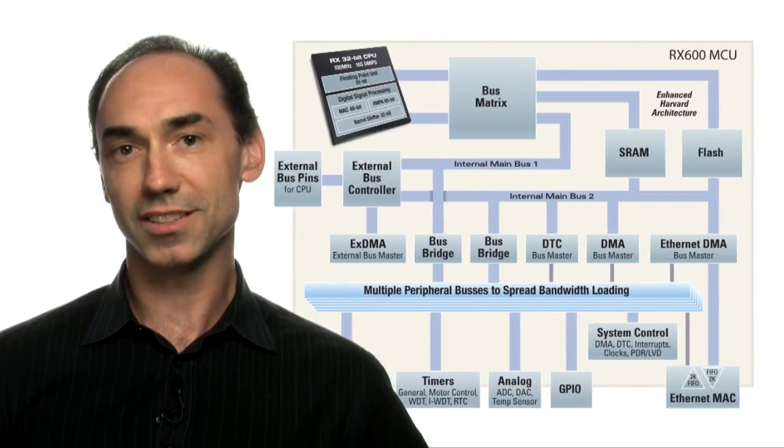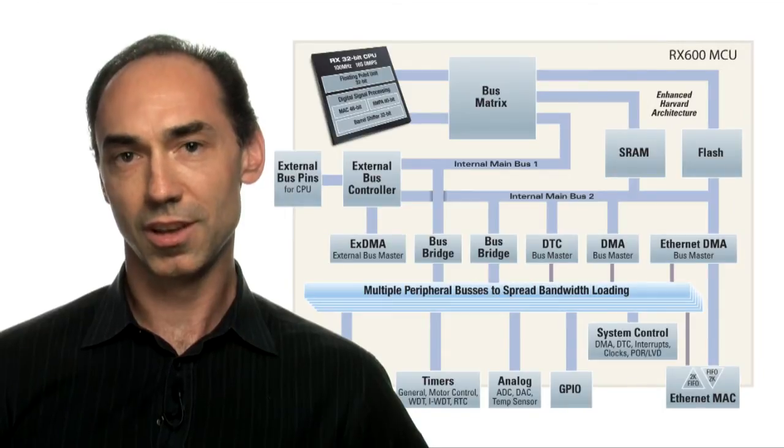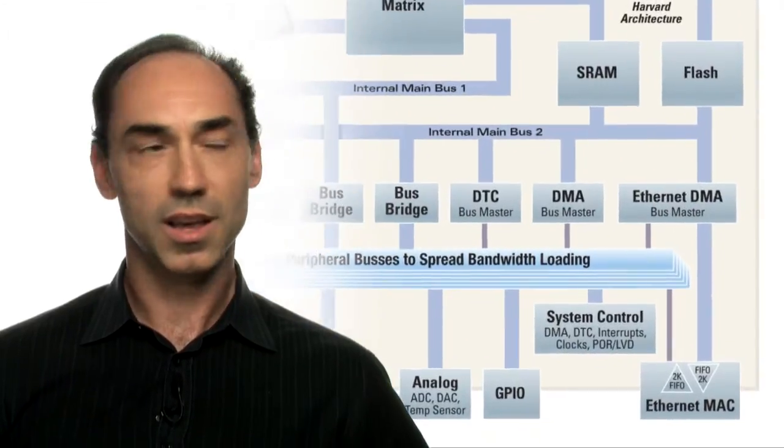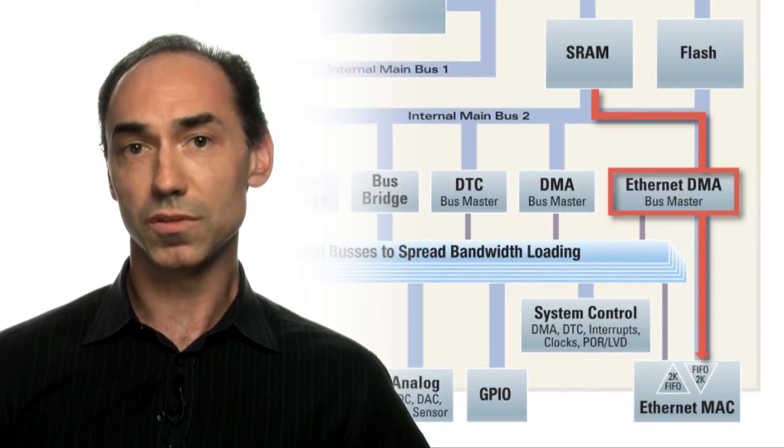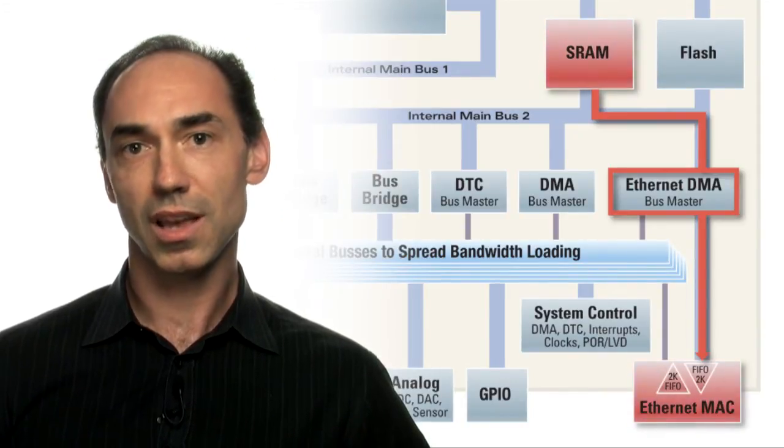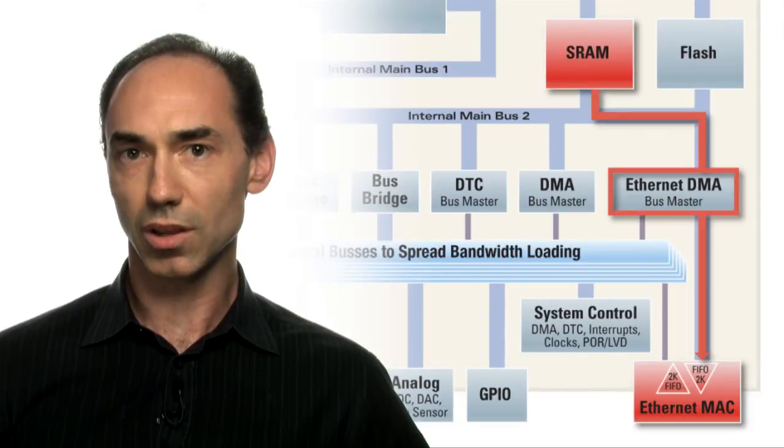Ethernet traffic can place significant demands on the CPU. To solve this problem, the RX62N has a dedicated Ethernet DMA controller, and it can be used to move data packets between the SRAM and the Ethernet MAC. This greatly offloads the CPU.